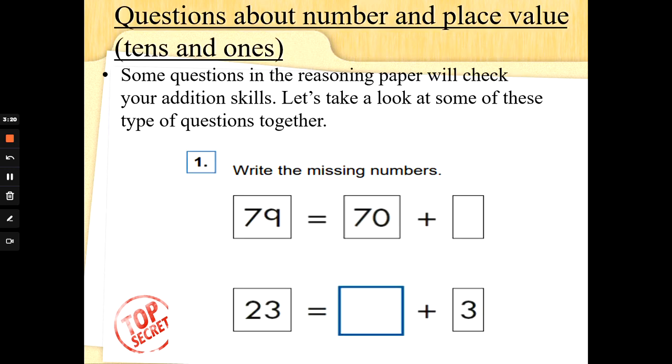Some questions in the reasoning paper will check your addition skills and your knowledge of place value. Question one, write the missing numbers. Seventy-nine is the same as seventy add what? And twenty-three is the same as what add three. My first piece of advice is think about the top question first, then the bottom question and don't rush. Seventy-nine is the same as seventy add, well, seven is the tens, seventy, and then we just need to put the ones, so we need to write nine in that box. Twenty-three is the same as what add three. So we've got the ones, we haven't got the tens. What does the two stand for in twenty-three? That's right, it stands for twenty. We're just partitioning, splitting it up into tens and ones. You've got to put an answer in both of the boxes to get that point, so you've got to be very careful that you don't rush and you don't miss anything out.